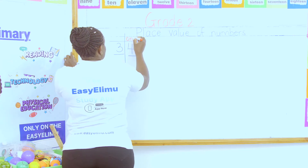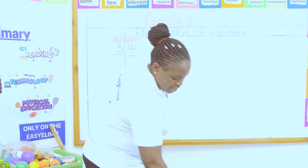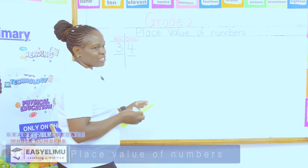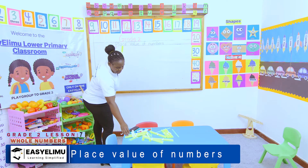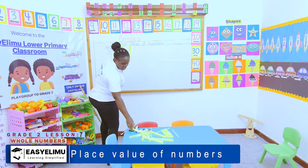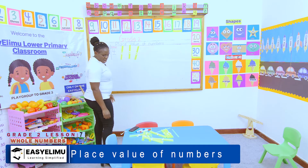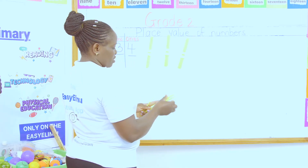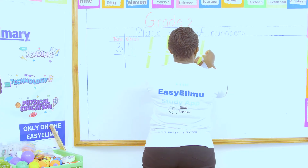The place value chart has ones and tens. If I'm told to show this number using sticks, how many tens do I have? Yes, Johnny — three tens. So I have one, two, three. And another question: how many ones do I have? Let's see — one, two, three, four. I have four ones.